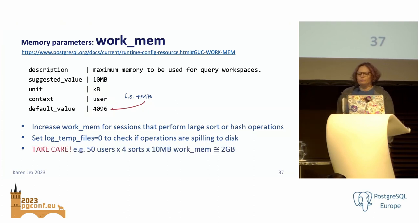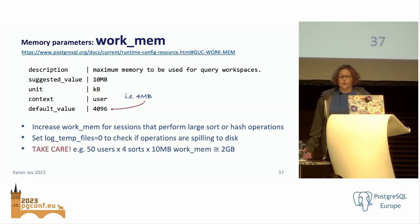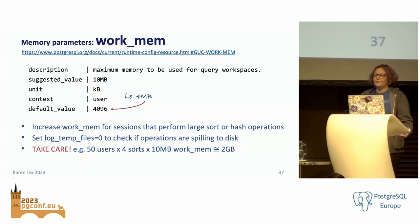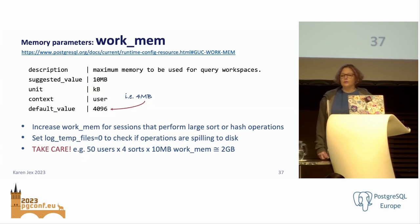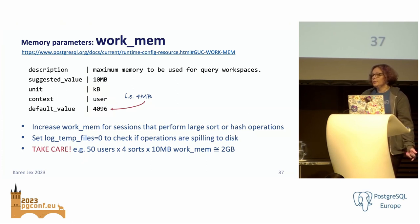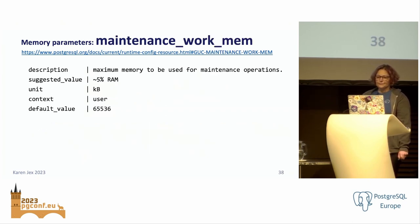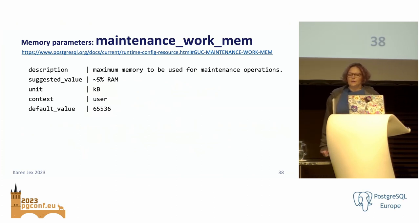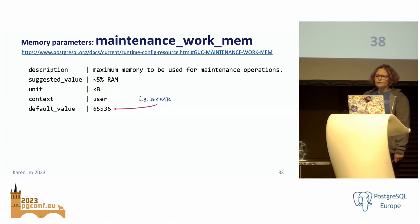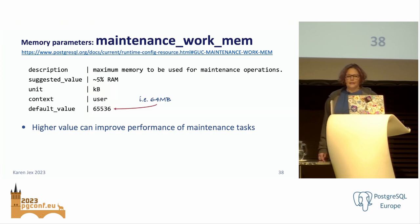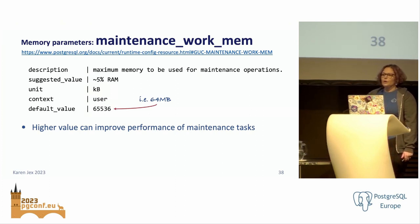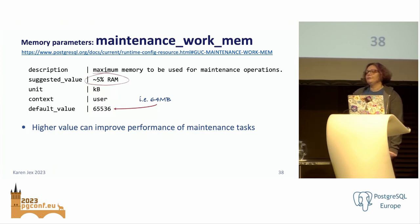work_mem defines the maximum amount of memory that can be used by a query operation before it spills to disk and creates a temporary file. The default is 4MB, but a larger value — say 10MB — can improve the performance of queries that perform large hash or sort operations. Using log_temp_files, you can see when temp files are being created. Be aware that a complex query might run multiple sort or hash operations in parallel, and several concurrent sessions could be doing that simultaneously. For example, 50 concurrent users each running a complex query with four sort operations at 10MB work_mem already comes to 2GB. It's often better to set work_mem to a high value just for the specific sessions that need it.